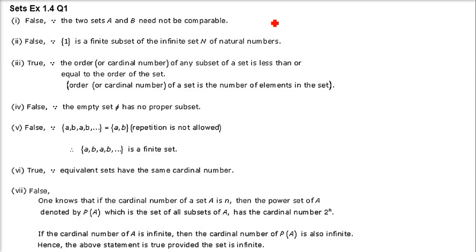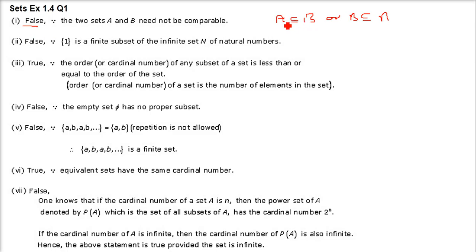The first statement is: for any two sets A and B, either A is a proper subset of B or B is a proper subset of A. This is false because the information is not complete — A and B may not be comparable at all. So that is why it is false.